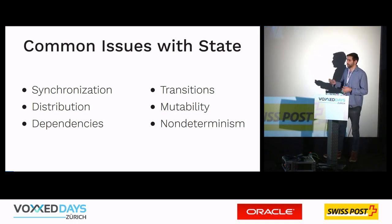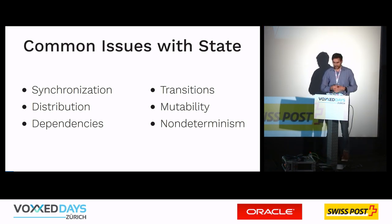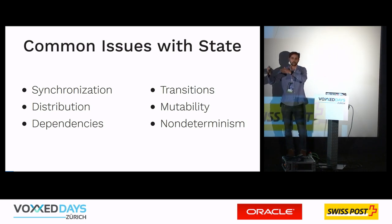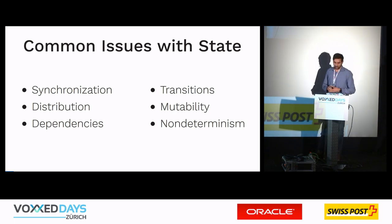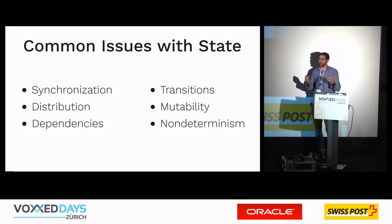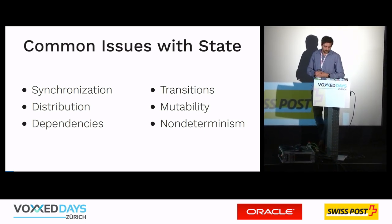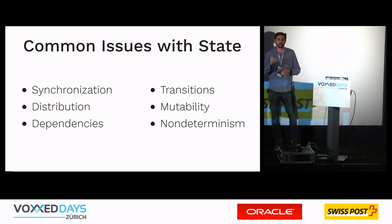Dependencies are usually a problem in state — one state depends on another state, and when one updates you need to update the other. That can lead to a lot of messy code. State transitions are also an issue: if you have a process your user is going through in a user interface, transitioning between different states can be a big problem. Mutability is also a big issue — if you're using object references in your state and updating state somewhere where you have another reference, you may update something you don't want.